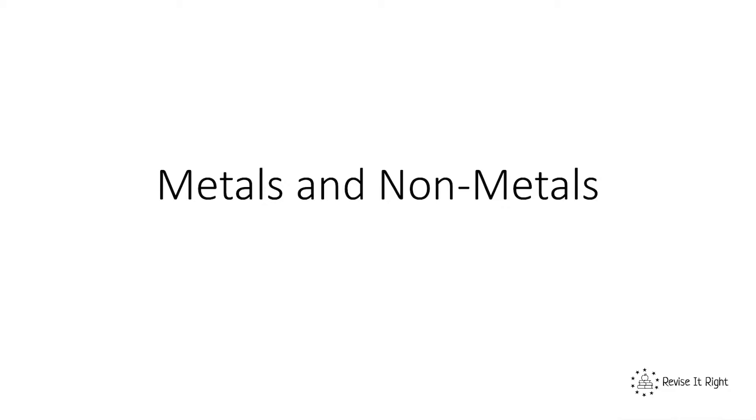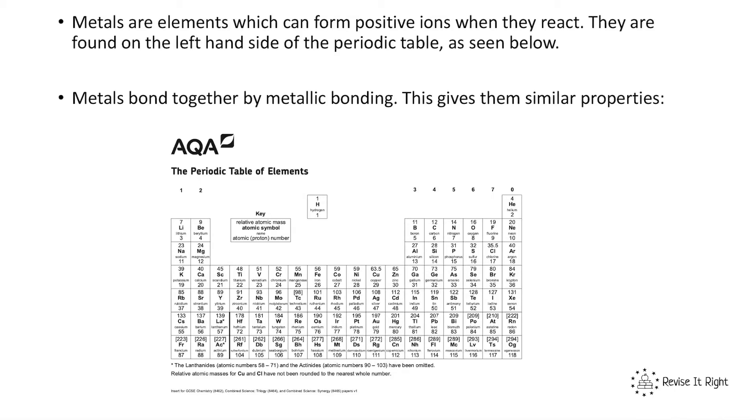This video is about metals and non-metals. Metals are elements which can form positive ions when they react because they lose electrons. For example, an element in group one only has one electron, so it's easier to lose one electron than gain seven.